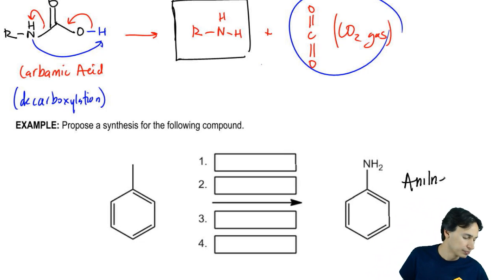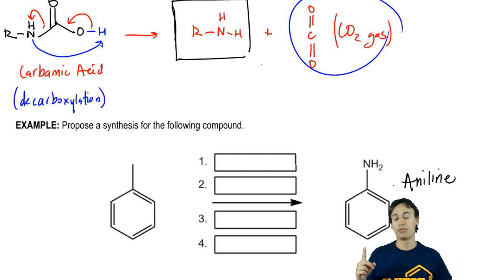Basically, what I'm trying to do here is I'm trying to make aniline and we've never learned an EAS technique to make aniline before. I want you to think about how you could use the Curtius rearrangement to make aniline and then I'll show you the answer. Go for it.